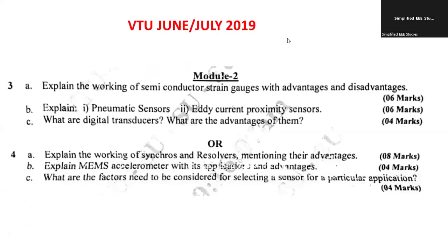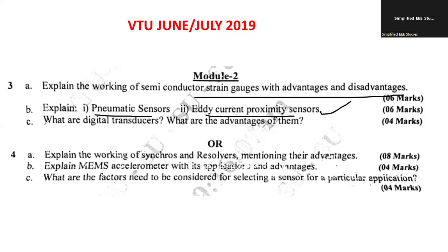Explain the working of the semiconductor strain gauge — what it is, its pros and cons — for 3 plus 3 marks. Explain the pneumatic sensor and the eddy current proximity sensor — very important, already a repeated question. Define digital transducer and state its advantages — carries 4 marks (2 plus 2).